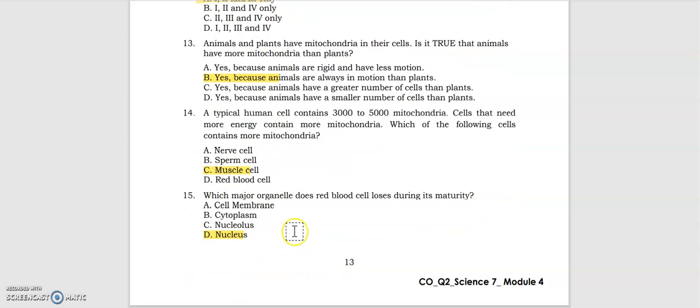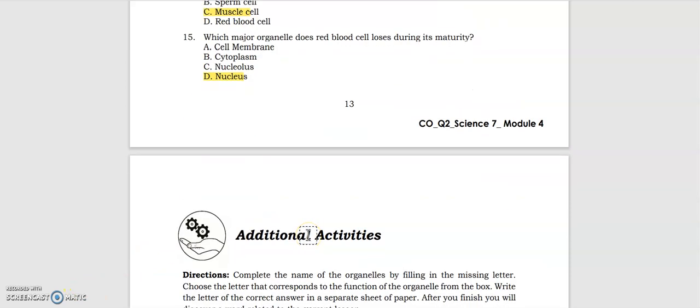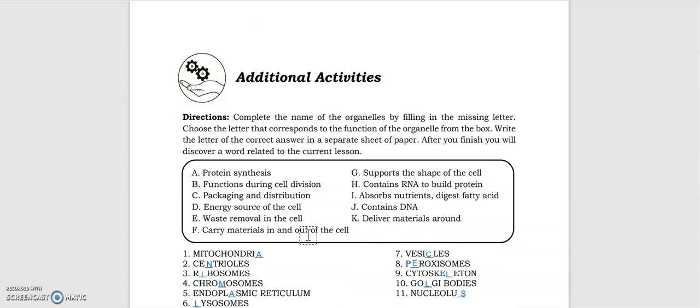For number fifteen: Which major organelle does red blood cell lose during its maturity? Letter D, the answer is nucleus. So that ends our assessment. Let's now proceed to the additional activities.